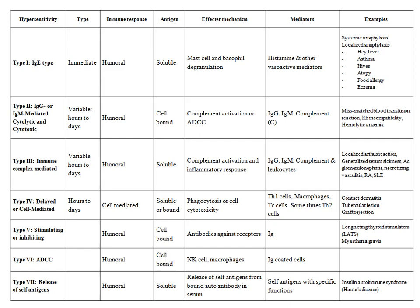Type 5 hypersensitivity is the stimulating or inhibiting type, involving the humoral arm of immunity. The antigen is cell-bound in the form of a receptor. When an antibody binds to the receptor, it can either stimulate or inhibit the associated response. Examples are long-acting thyroid stimulators (stimulating type) and myasthenia gravis (inhibitory type).